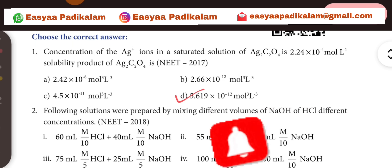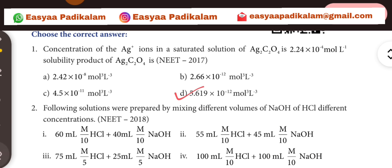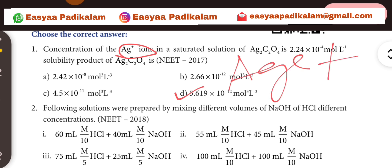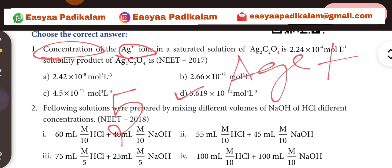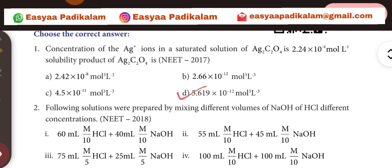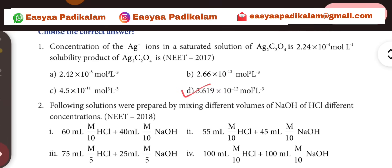First question. The concentration of Ag+ ions. Ag+ ions are being called H+ ions. They will have to concentrate very well. The answer is 5.619.